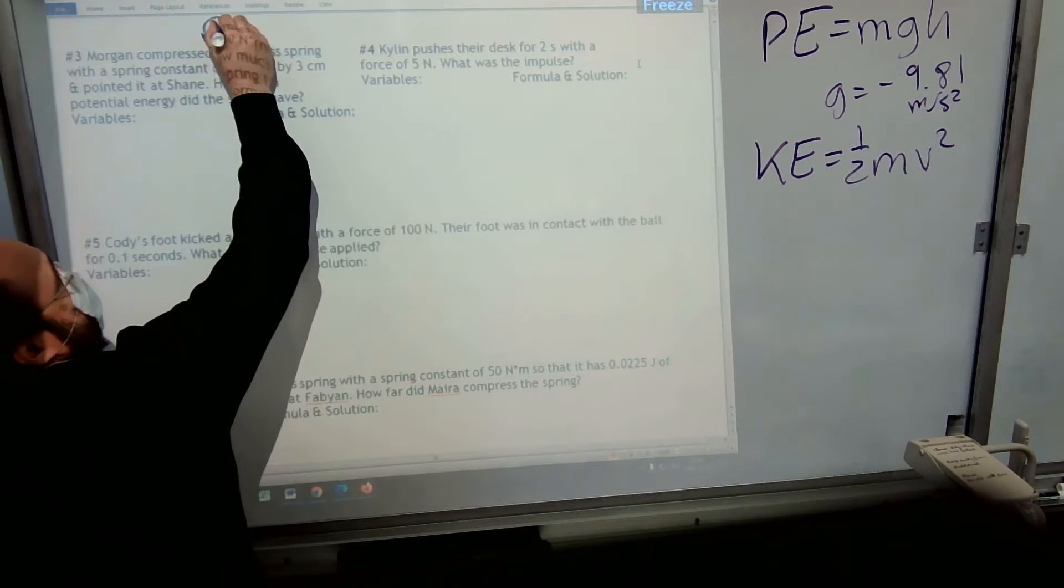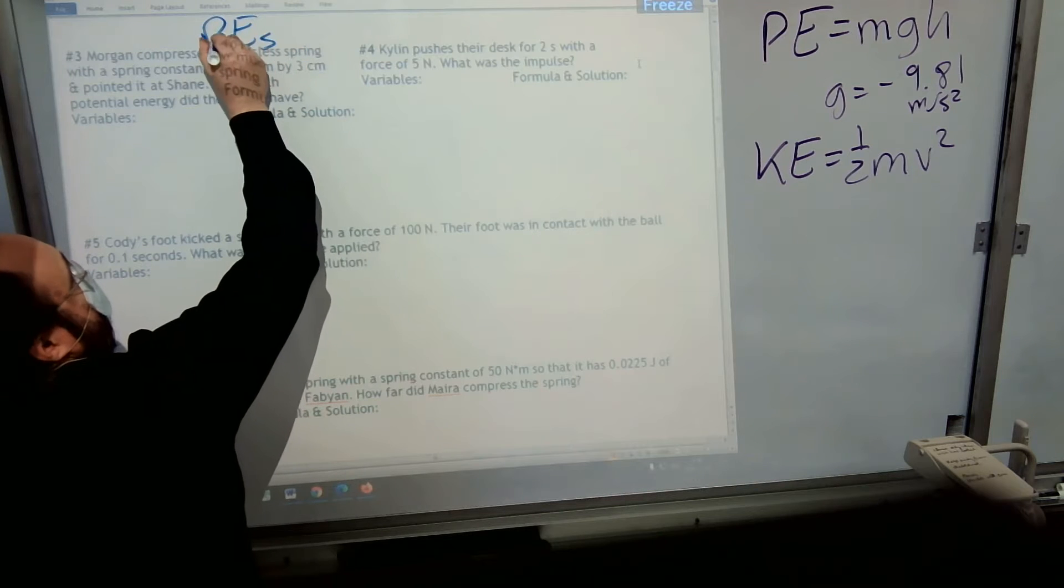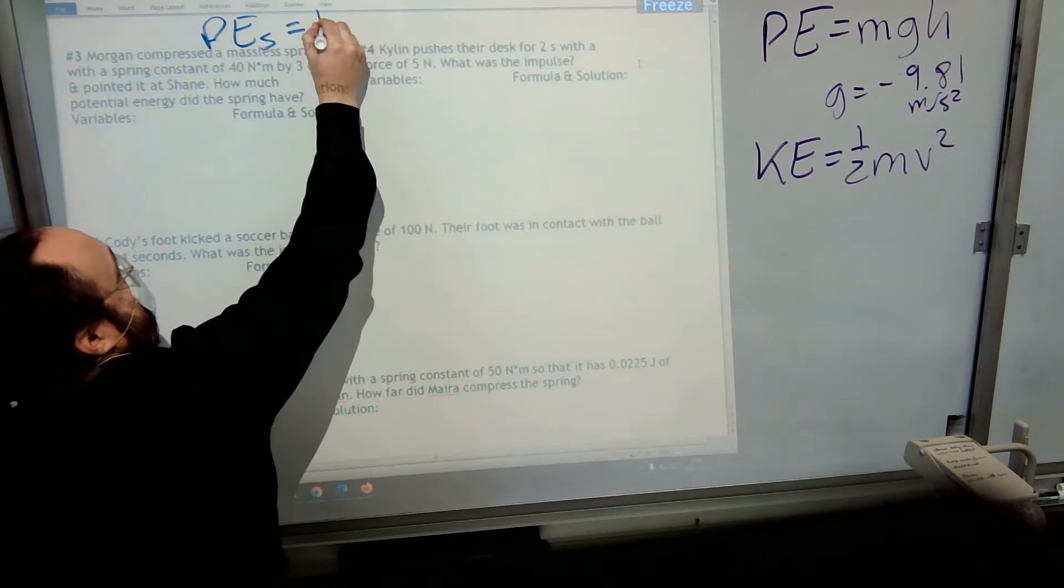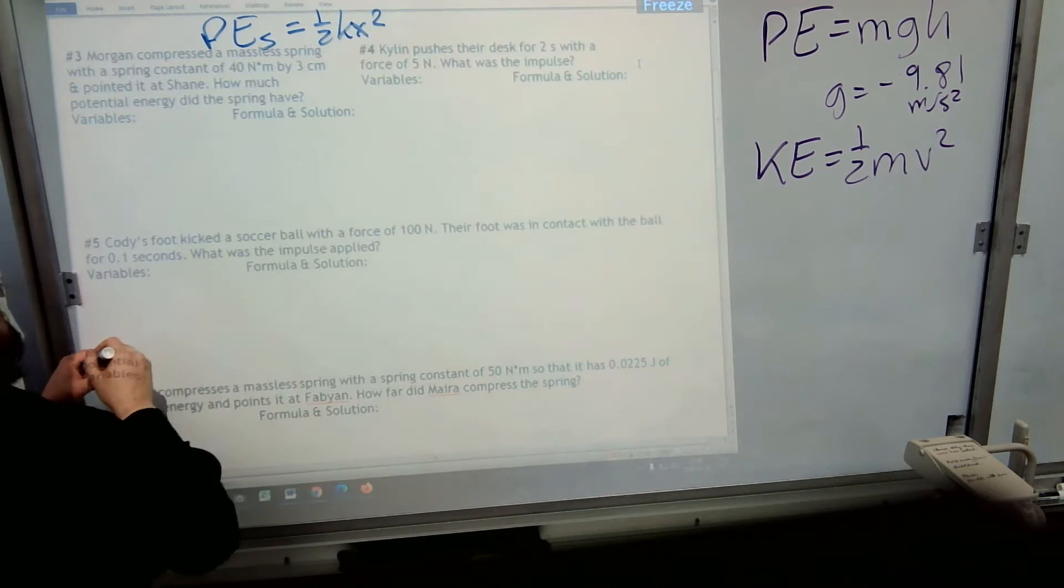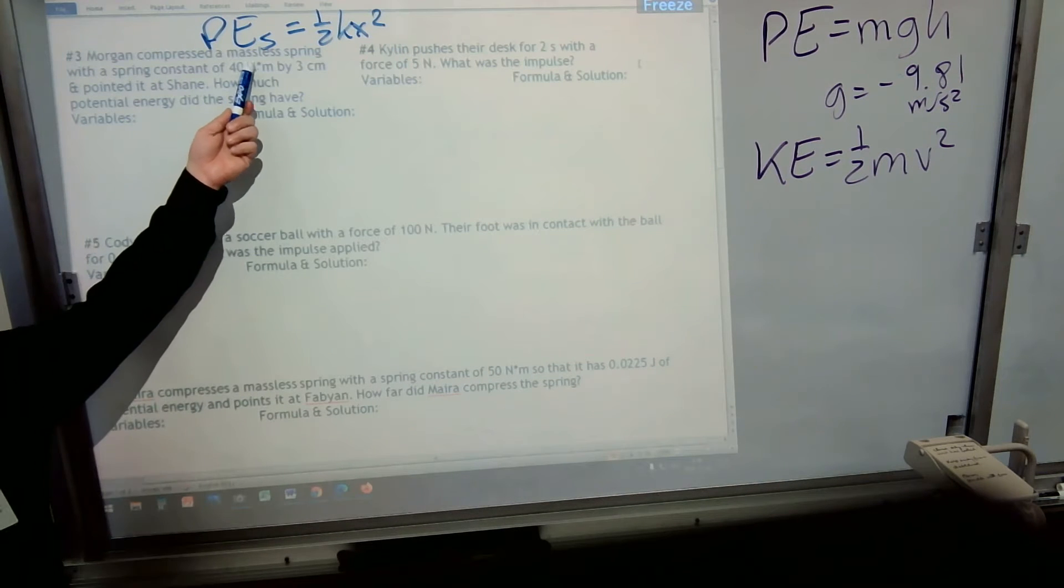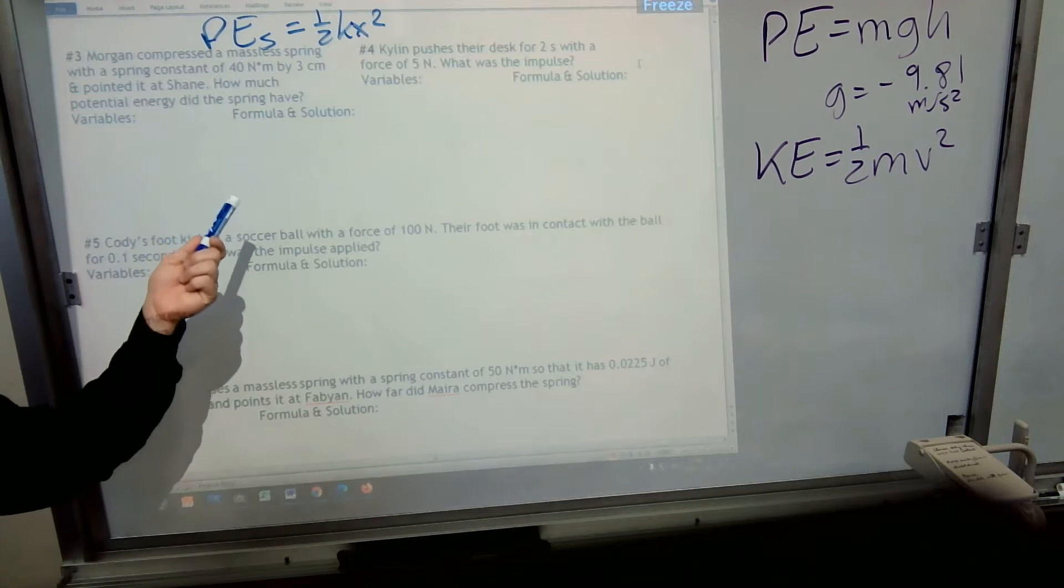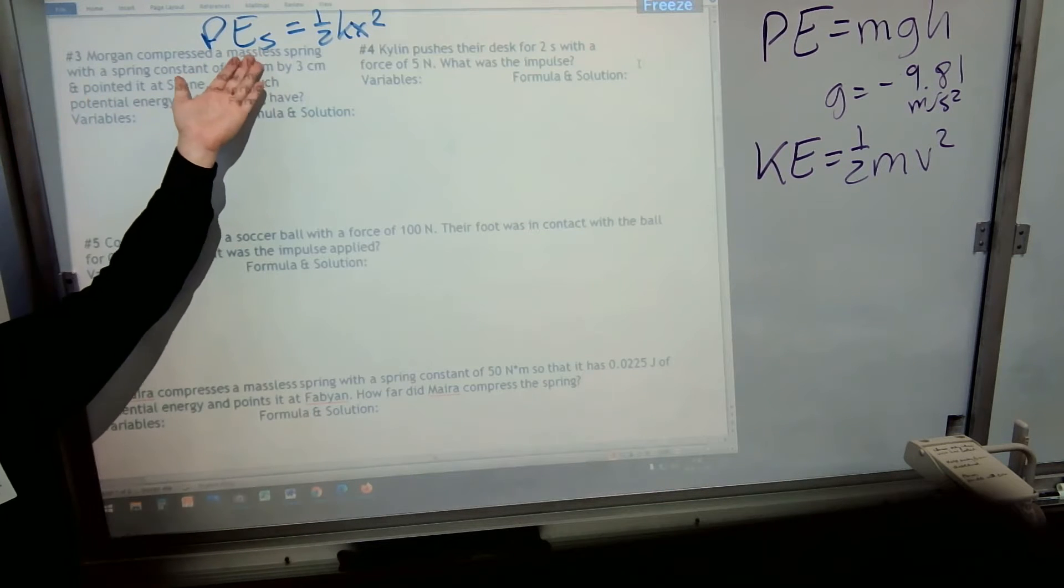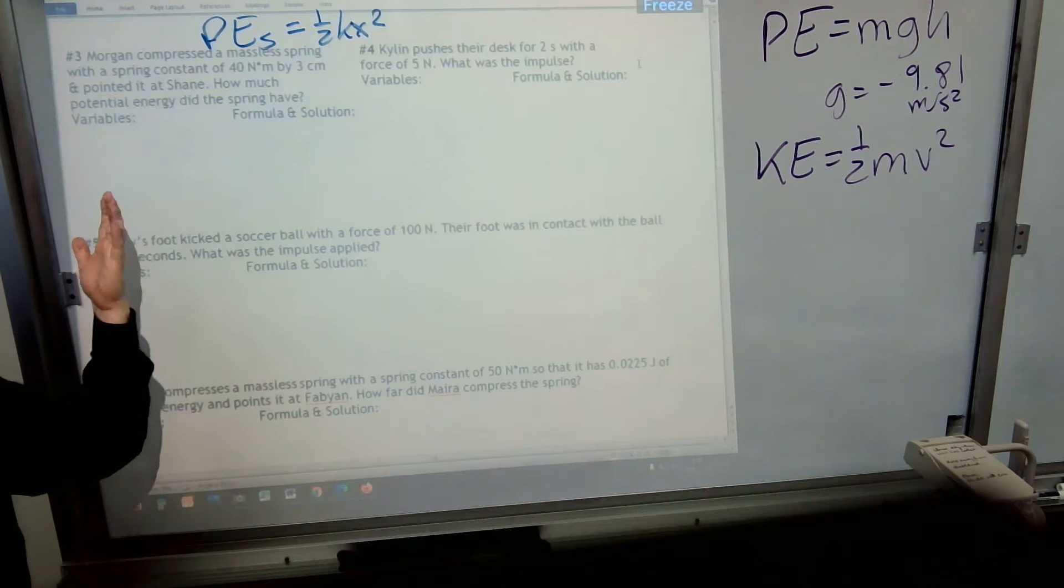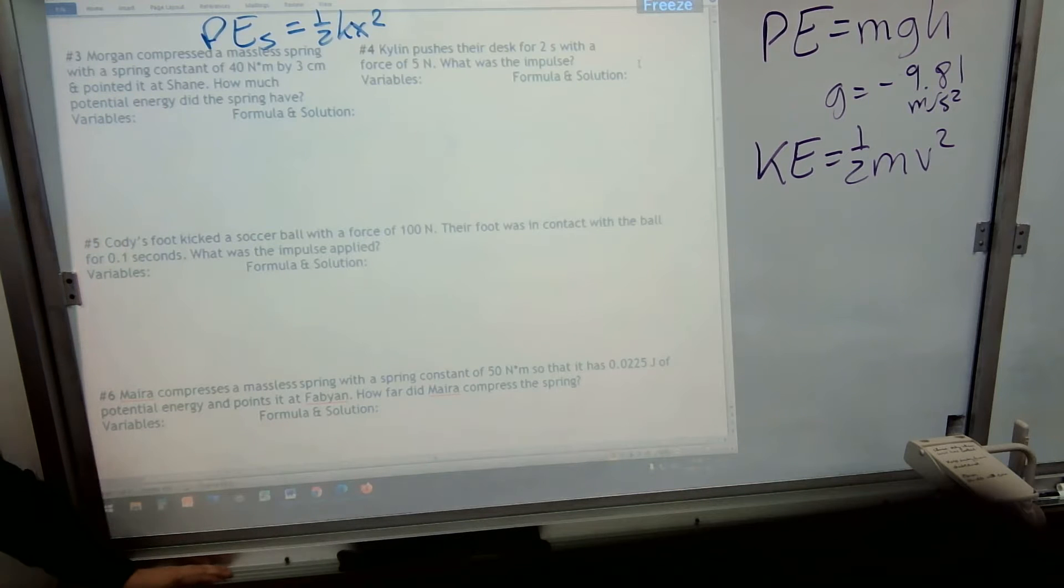The one that says potential energy of a spring is one-half kx squared. It's elastic potential energy, which springs a lot of the time, but can also be like a rubber band. So it's not always springs. But we call it PES for spring potential energy, which is the same as saying elastic potential energy.